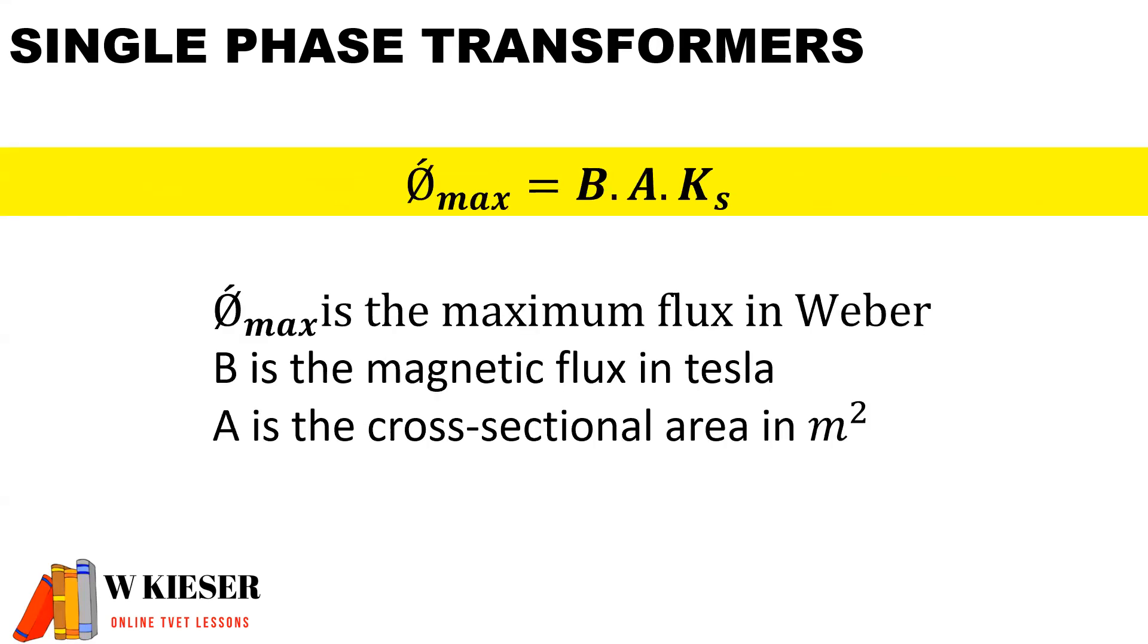The other equation or formula we'll be using is the maximum flux per pole in Weber is equal to the strength of the magnetic field measured in Tesla, multiplied by the area in meters squared, and then we multiply by the stacking factor.